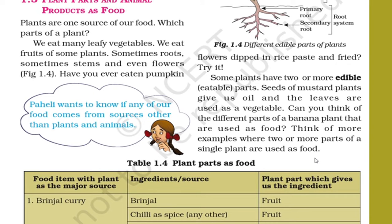For example, we can say mustard plant, pumpkin plant, and coriander plant. In the mustard plant, its seeds as well as the leaves are both edible. In pumpkin plant, the fruit — that is pumpkin — and the leaves are also edible. In coriander plant, we can eat its leaves as well as the seed part. These are examples of plants whose two or more parts are edible.